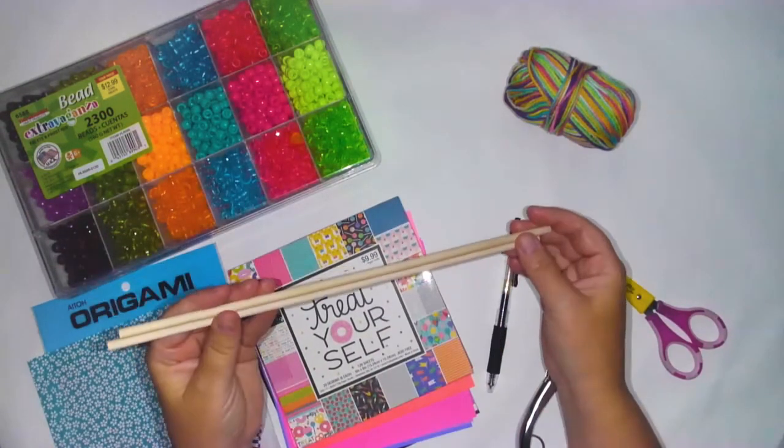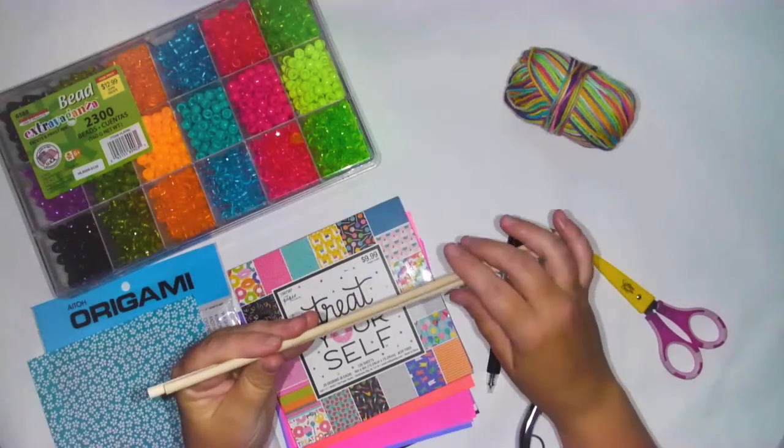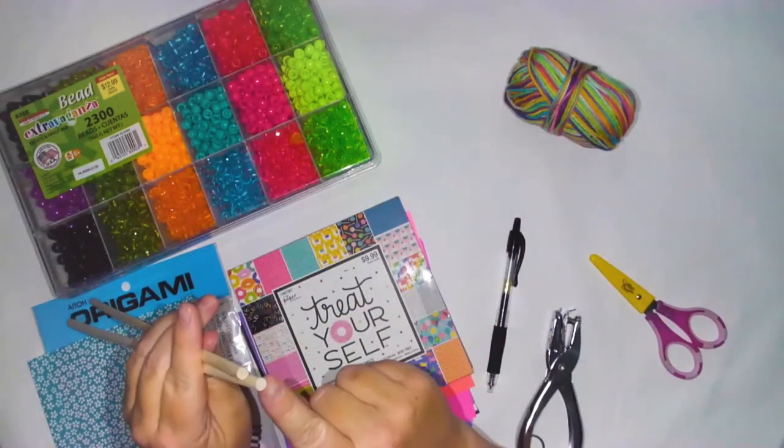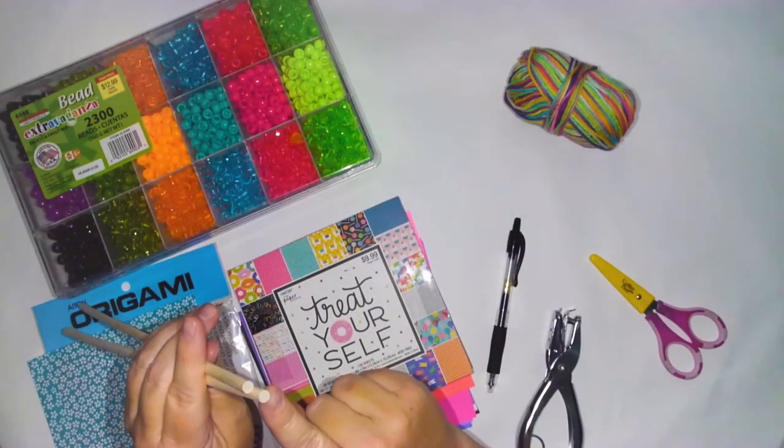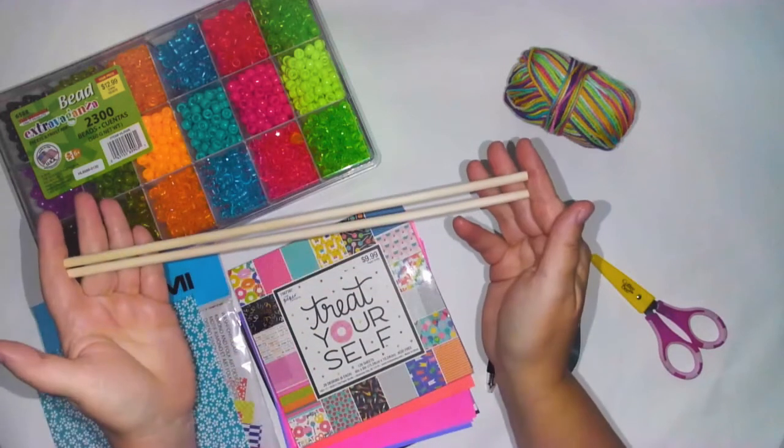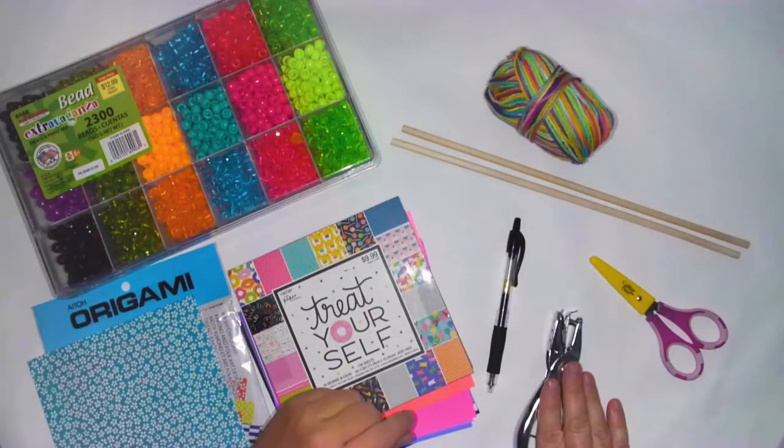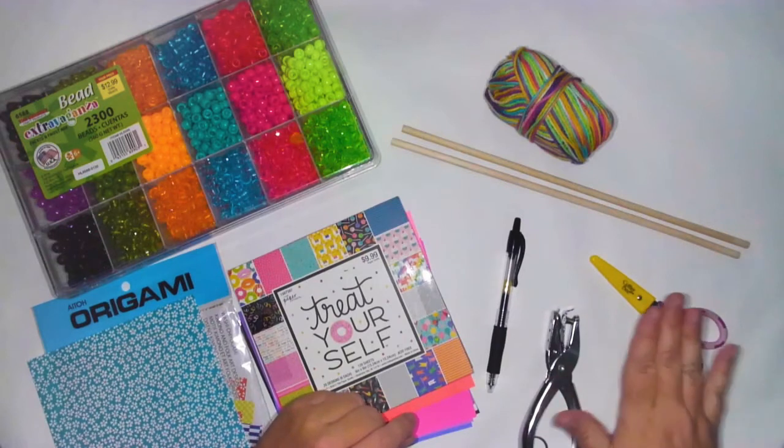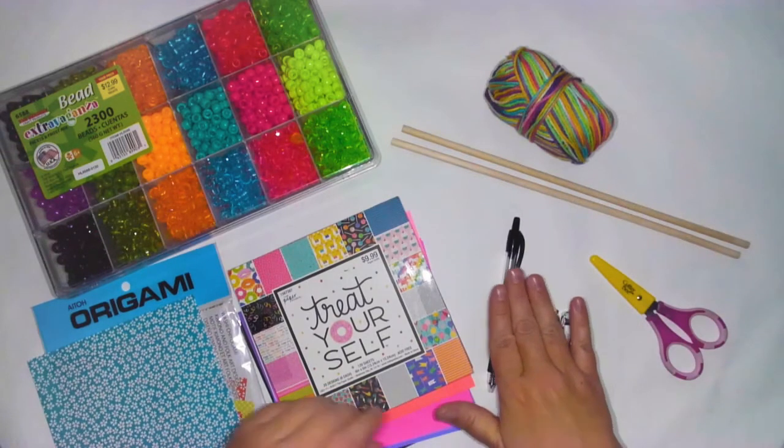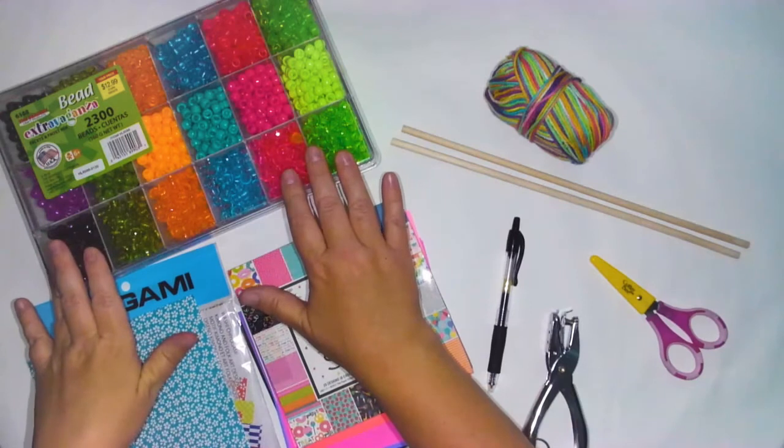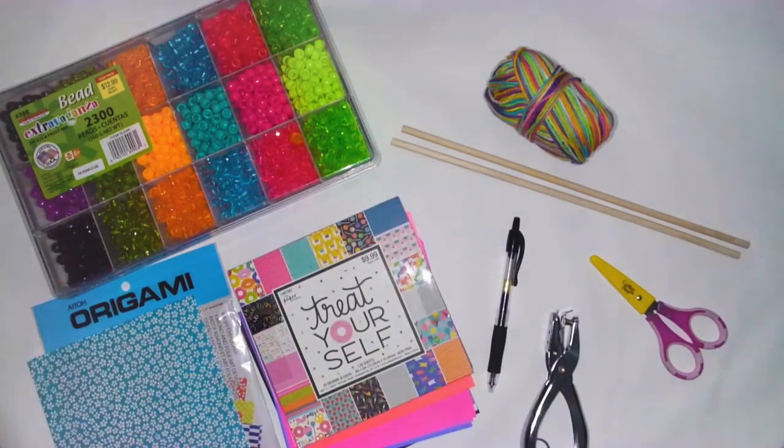Two wooden dowels, quarter inch in diameter and 12 inches long, yarn, a hole punch, a pair of scissors, some kind of writing utensil, an assortment of plastic pony beads. Be sure to check out the description below for a full list of materials.